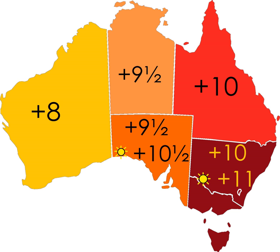Though the governments of the states and territories have the power to legislate variations in time, the standard time within each is set relative to Coordinated Universal Time as determined by the International Bureau of Weights and Measures, set by Section 8AA of the National Measurement Act of 1960. Australia has kept a version of the UTC atomic timescale since the 1990s, but Greenwich Mean Time remained the formal basis for the standard times of all states until 2005.